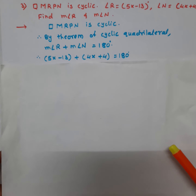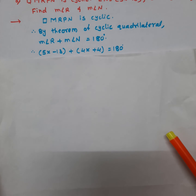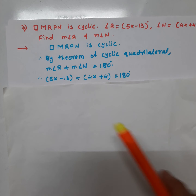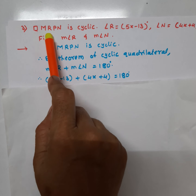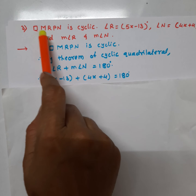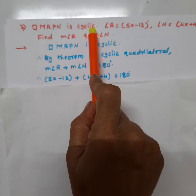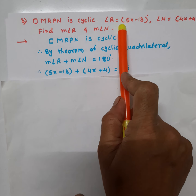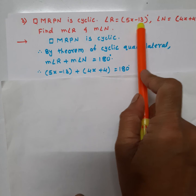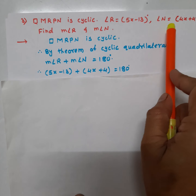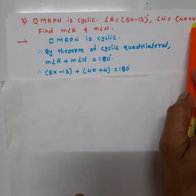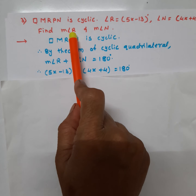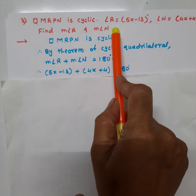In the next example, quadrilateral MRPN is cyclic. Angle R is equal to 5x minus 13 and angle N is equal to 4x plus 4. Find the measure of angle R and the measure of angle N.